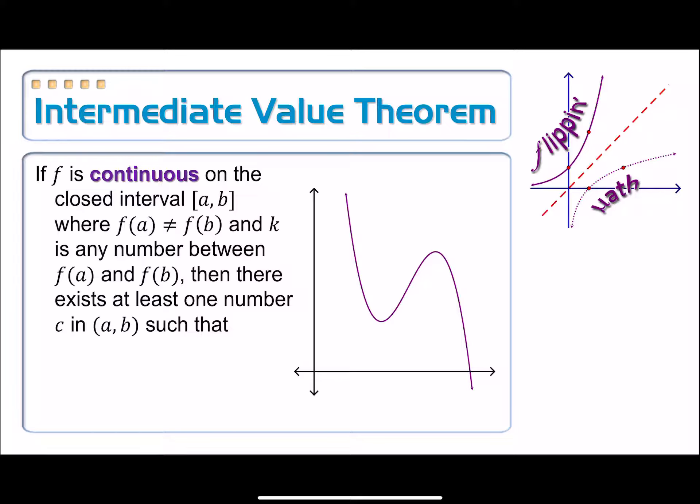I guarantee it will be on your AP exam in multiple instances. Let's take a look at it. If f is continuous on the closed interval from a to b, where f of a and f of b are not equal, and k is any number between f of a and f of b, then there exists at least one number c in the open interval from a to b such that f of c is equal to k.